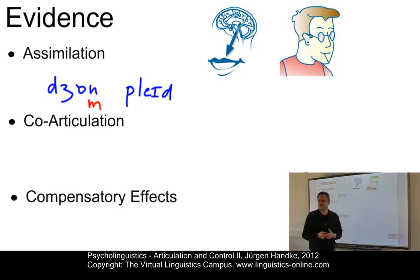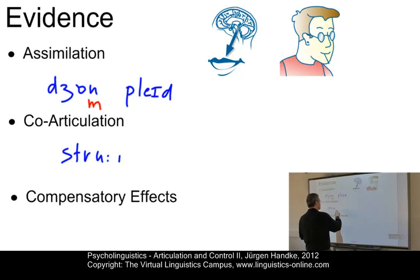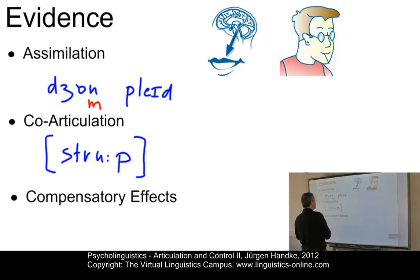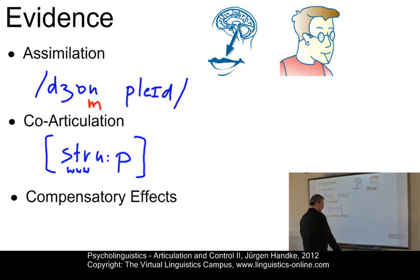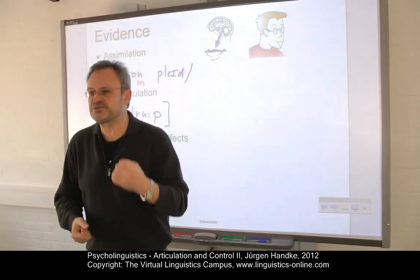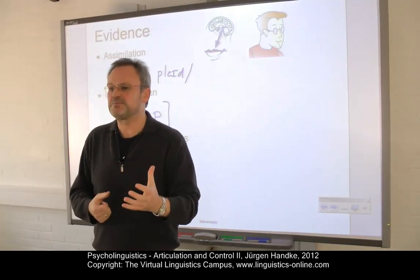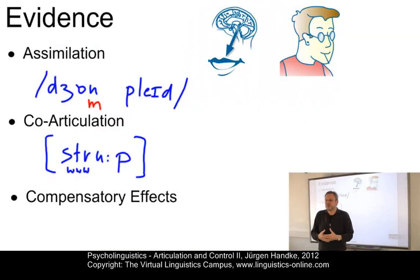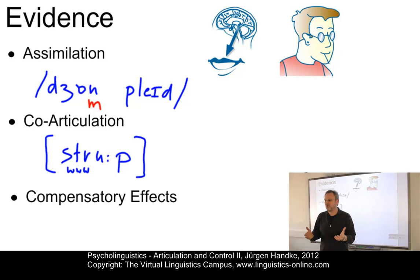Co-articulation processes are illustrated by the word 'stroop.' In terms of a narrow phonetic transcription, we know that lip rounding occurs already on the first three consonants. So we do not say 'stroop' but 'stroop' — even before we produce the alveolar fricatives, we round our lips. Again, we have an anticipatory activity that can only be accounted for by the open loop model.